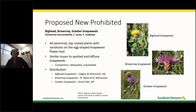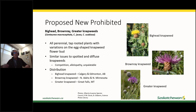Other proposed new prohibited knapweeds include bighead, brownray, and greater knapweed, in addition to the ones already on our list. All have that vase-shaped bud with flowers spreading out past the base. Bighead knapweed has a yellow flower; the other two are magenta or pink like spotted knapweed. Bighead knapweed is currently found in the Calgary-Edmonton area. Brownray knapweed is in northern Idaho and northern Minnesota — on either side of us. Greater knapweed is right now in Great Falls, Montana, so it's not very far away.